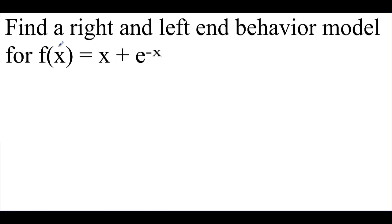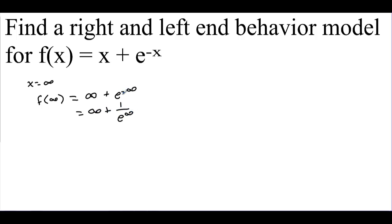Find a right and left end behavior model for f of x equals x plus e to the negative x. A right end behavior model is when x approaches infinity. We have infinity plus e to the negative infinity, which equals infinity plus 1 over e to the infinity. If we have an extremely large value in the denominator, this fraction goes to 0 — so it's like infinity plus 0, which equals infinity. Therefore, the right end behavior model is f of x equals x.